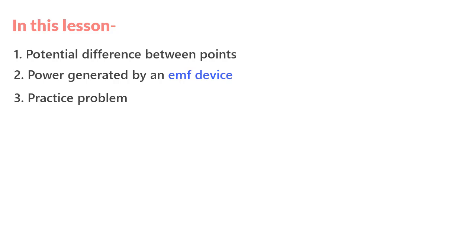So here is a circuit that has a battery with EMF E, internal resistance R and an external resistance of value capital R, and we are asked to find the potential difference between points A and B or VB minus VA, where VB represents the potential at point B and VA at point A.